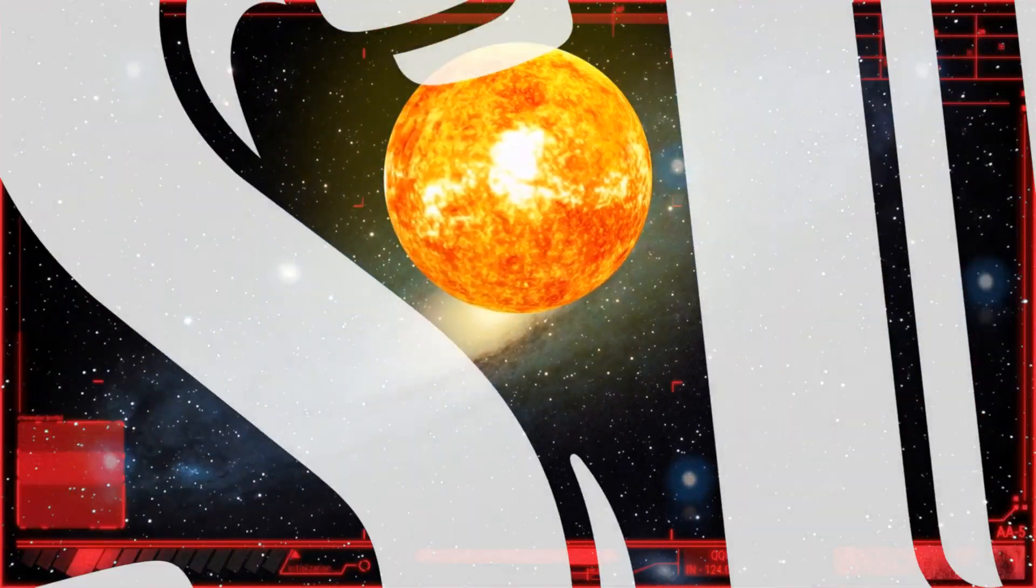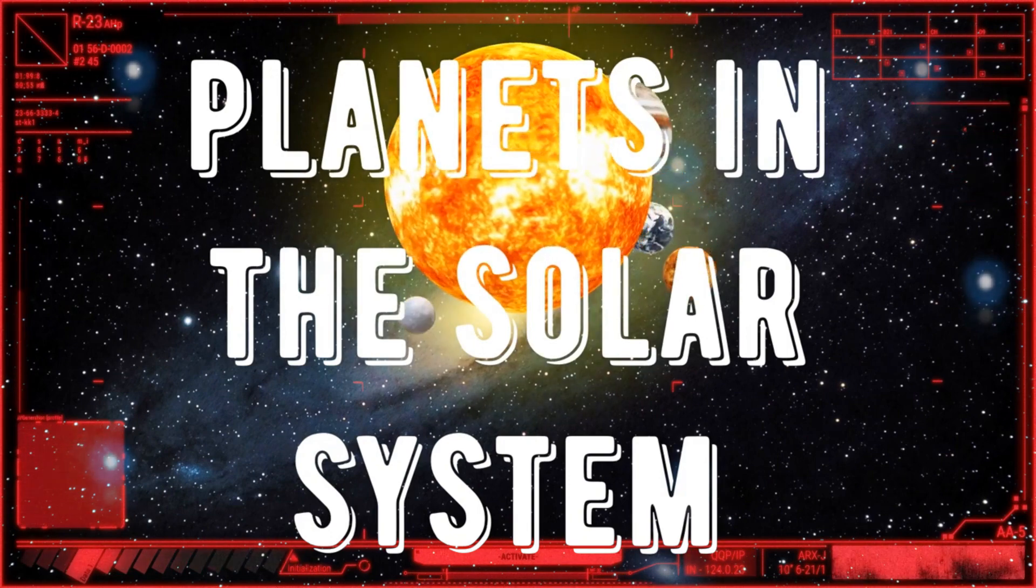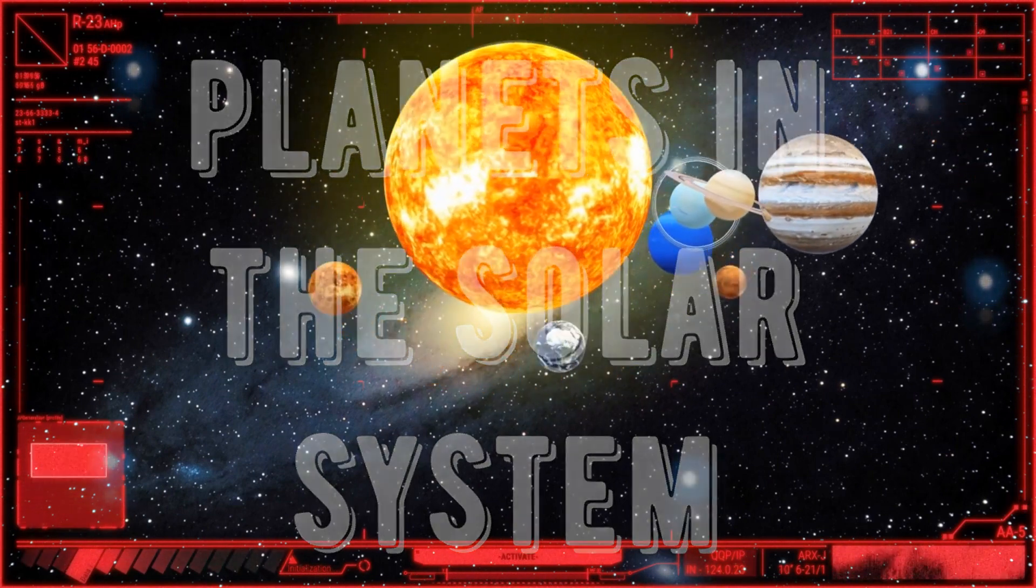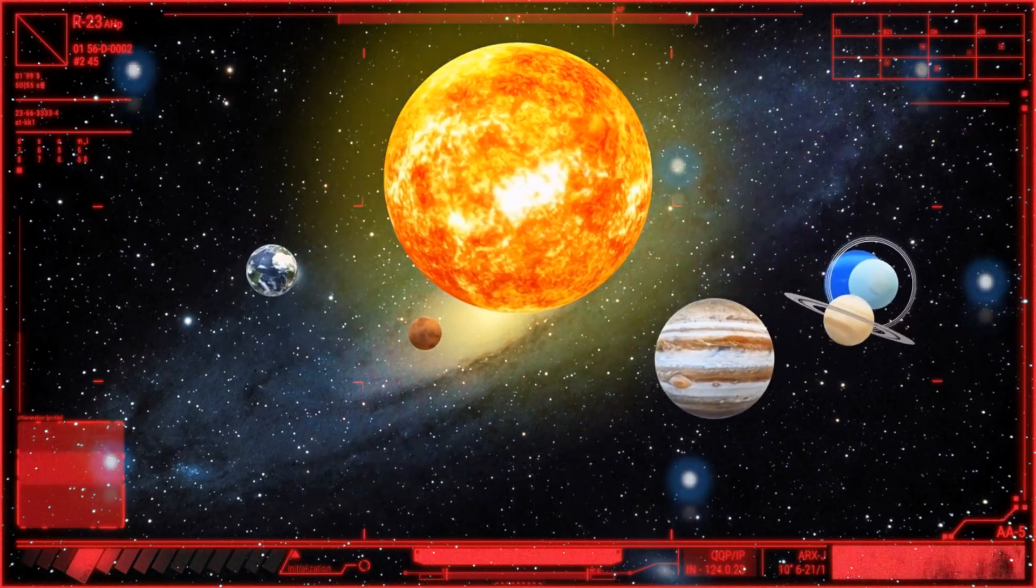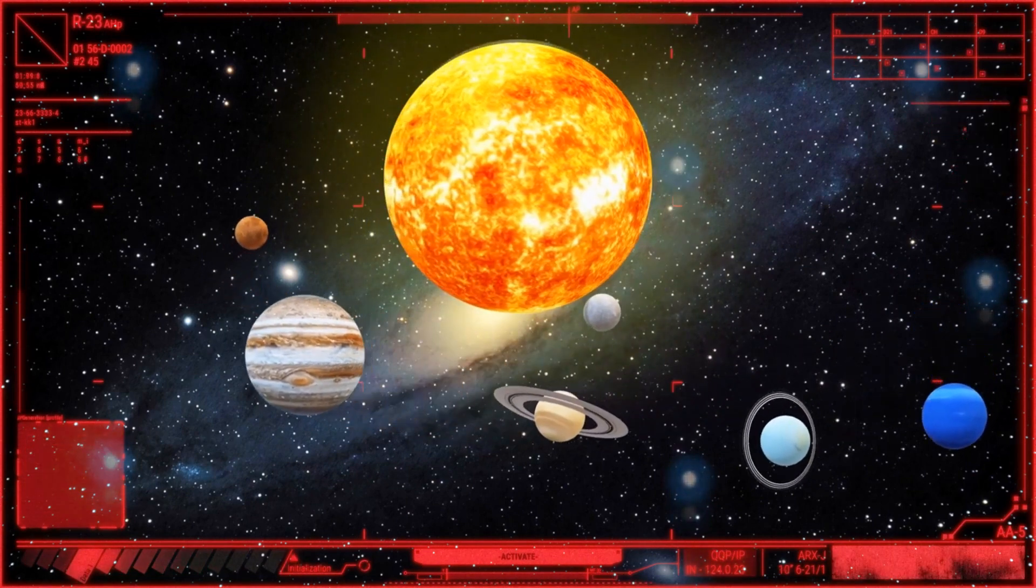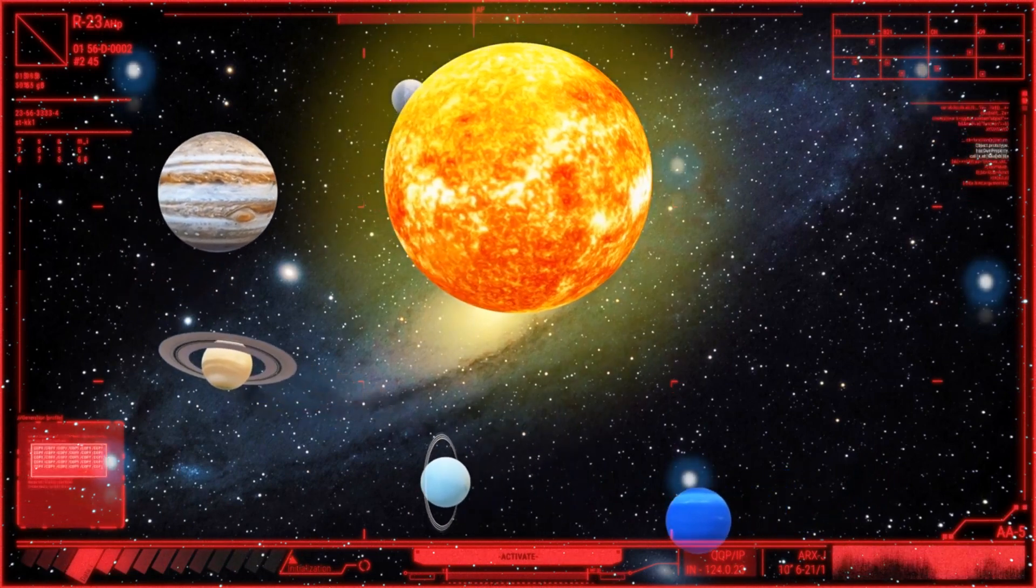Planets of the Solar System. Description, composition, and interesting facts. The solar system is an amazing and diverse place consisting of eight planets and many other celestial bodies. In this report, we will study each planet in our solar system. Consider their composition, distance from the Sun, and some interesting facts about them.